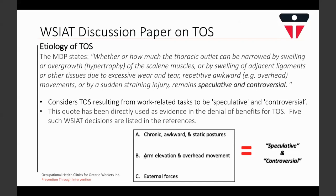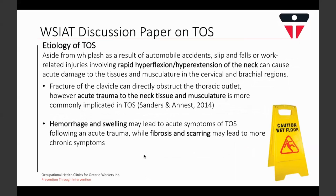Part of what the paper classifies as speculative is TOS resulting from acute injury, such as whiplash from an automobile accident, slips and falls, or other work-related injuries involving hyperflexion and hyperextension of the neck. Several studies describe mechanisms by which acute trauma to neck tissue and surrounding muscles can cause both acute symptoms through hemorrhage and swelling in injured muscle tissue, as well as chronic symptoms through fibrosis and scarring of muscles surrounding the thoracic outlet. This causes the scalene muscles to become shorter and stiffer, compressing the brachial plexus nerves, usually worsened with hand and arm activities.